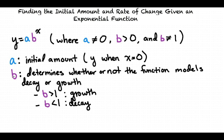The constant b determines whether or not the function will model exponential growth or decay. If b is greater than 1, then the function models growth, and if b is less than 1, then it models exponential decay.